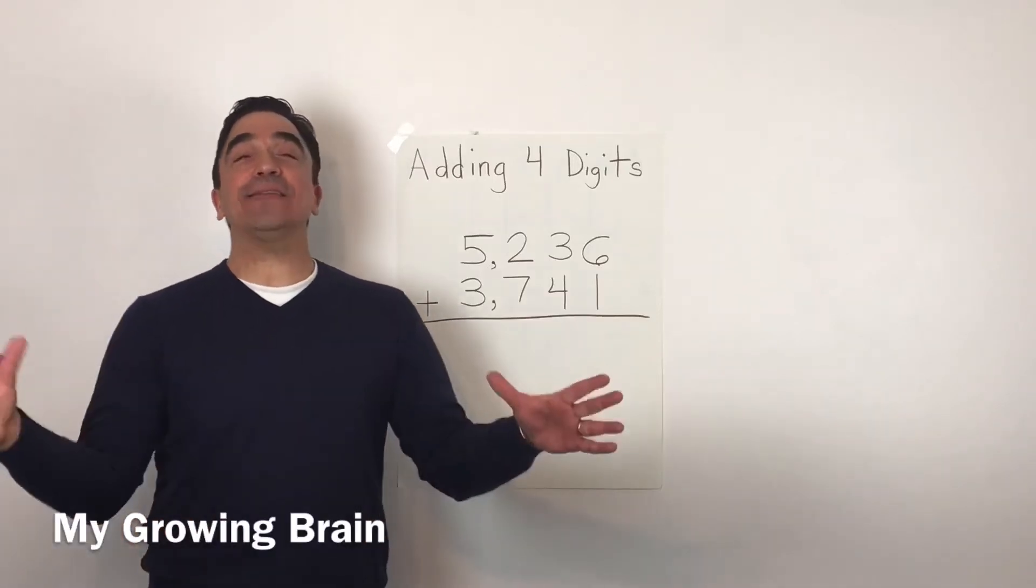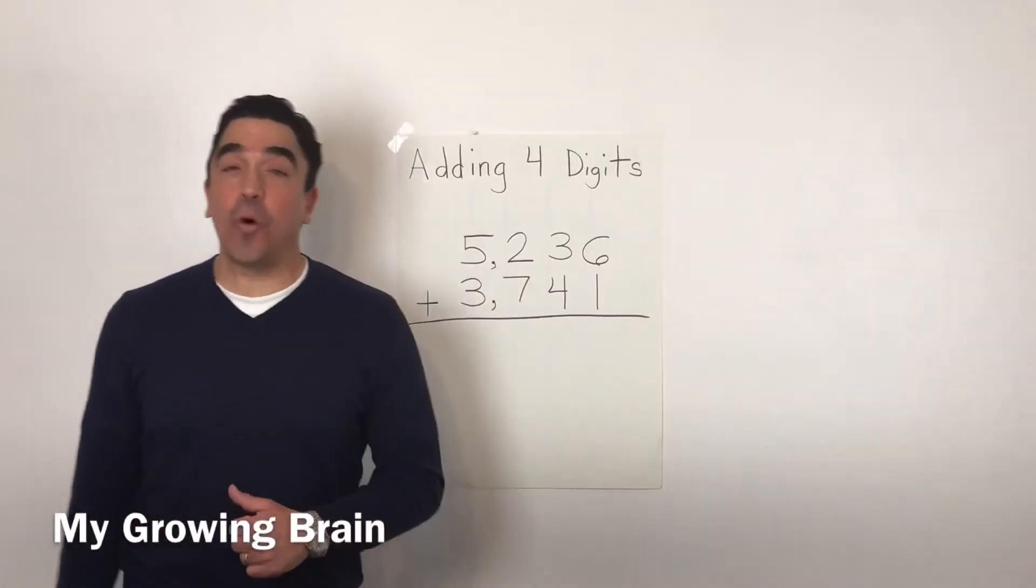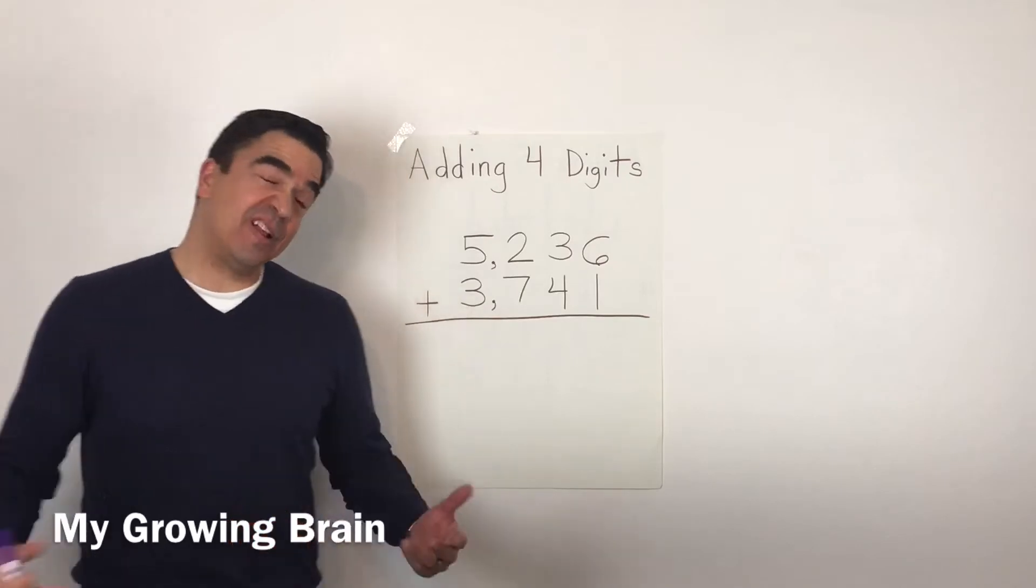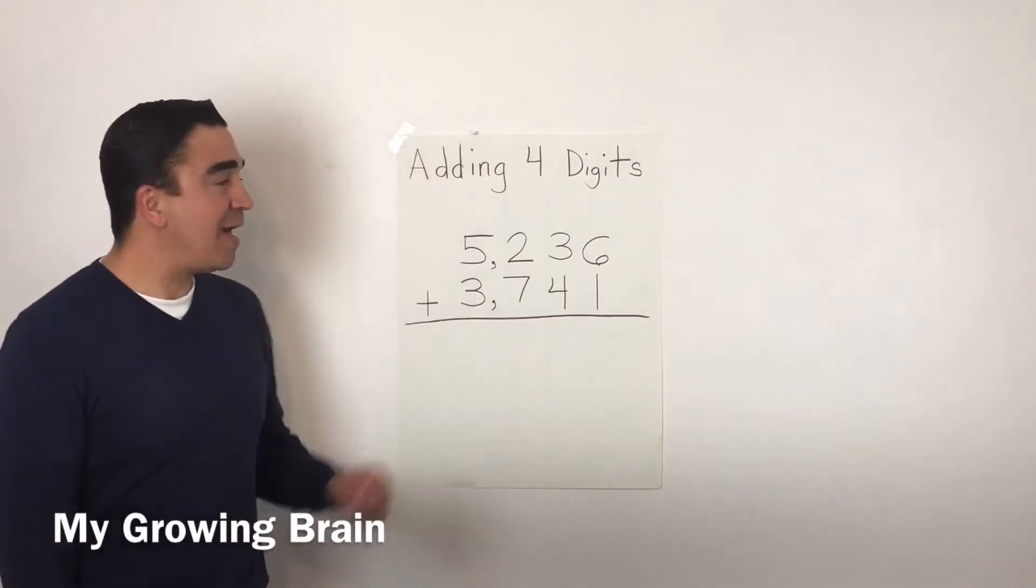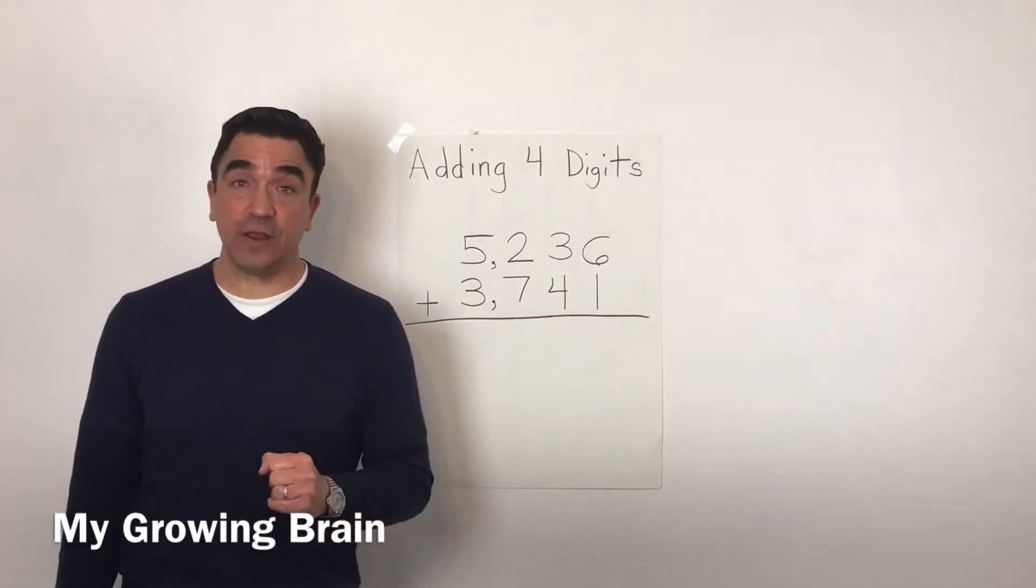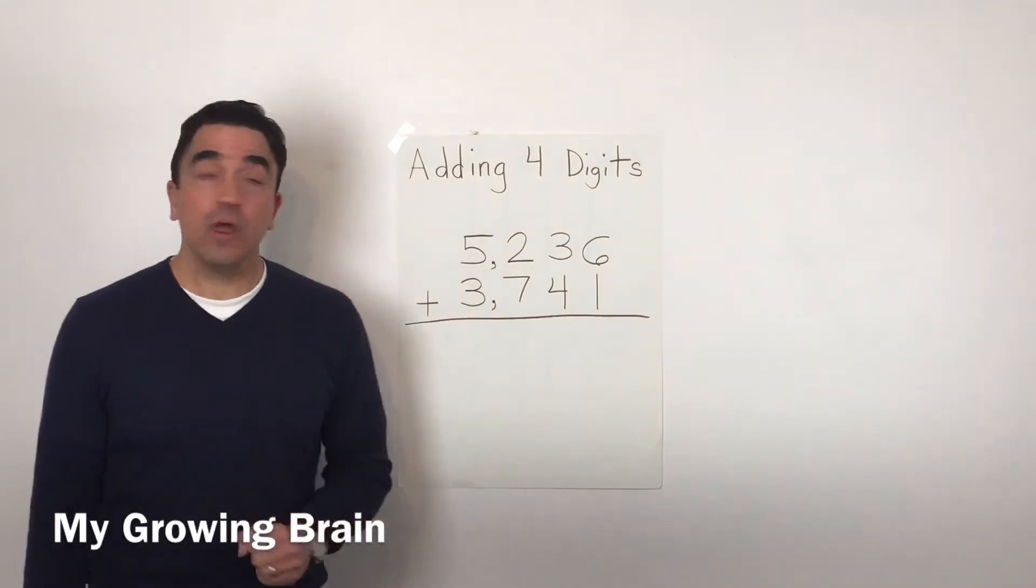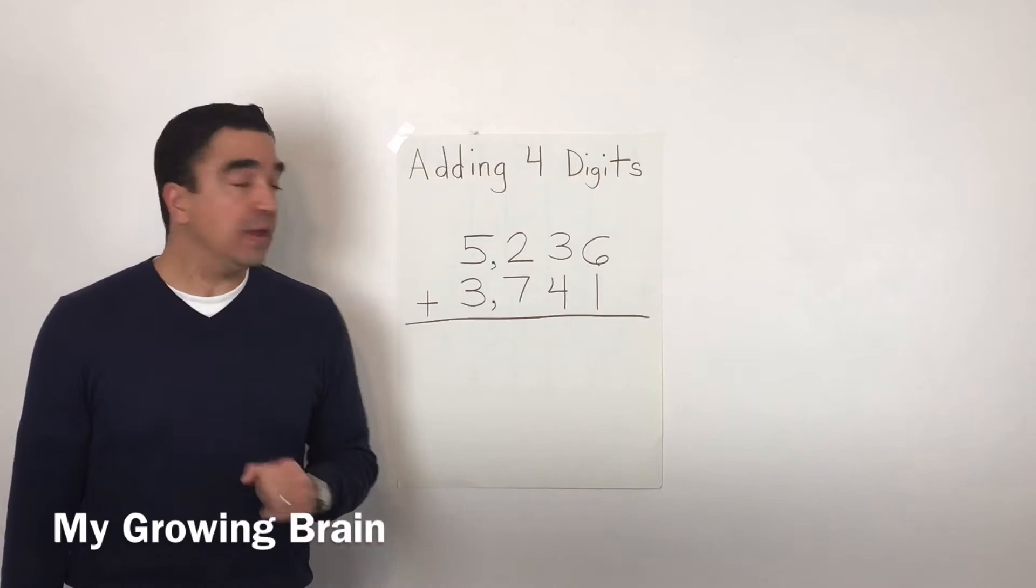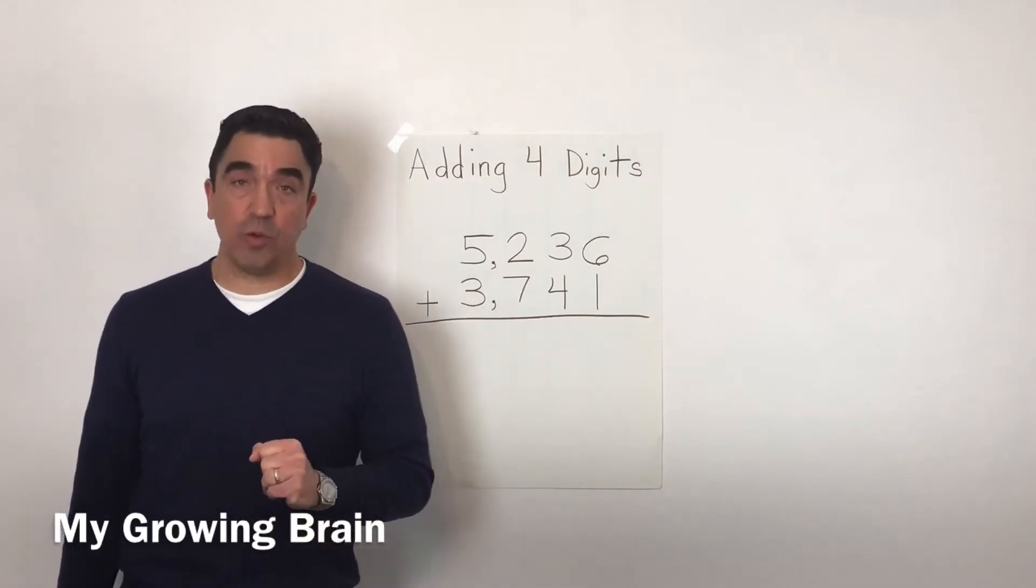Hi there, Coach Mike, and today we are adding four digit numbers. Let's take a look at our problem. 5,236 plus 3,741.